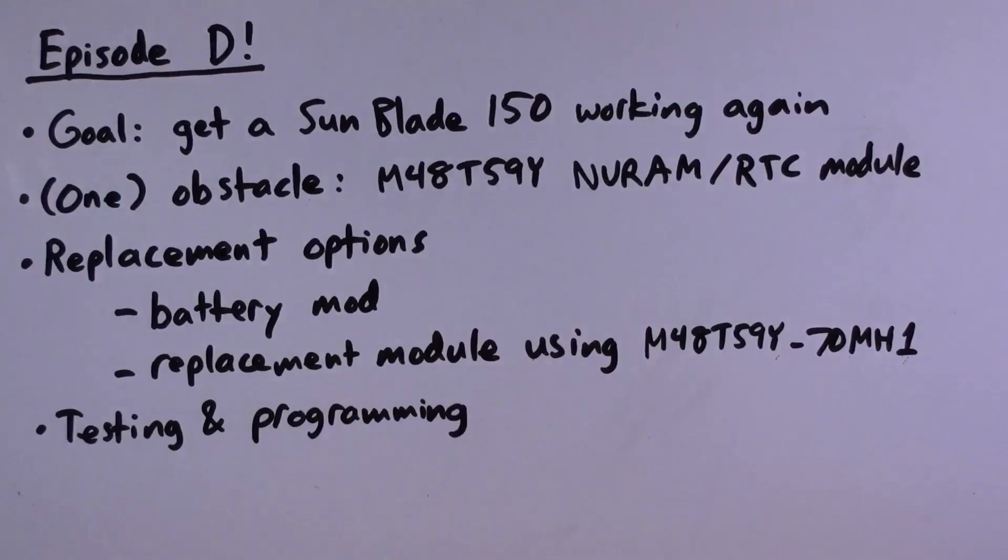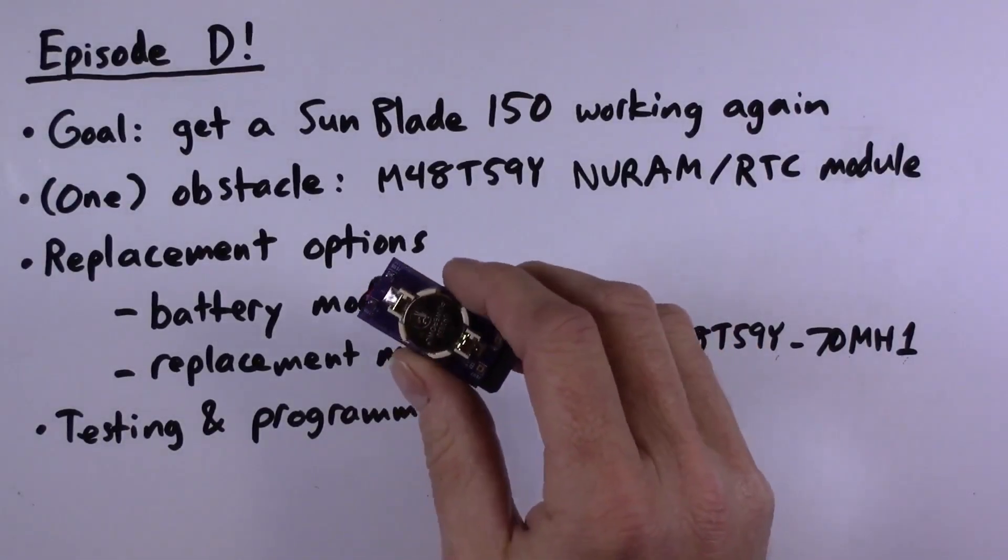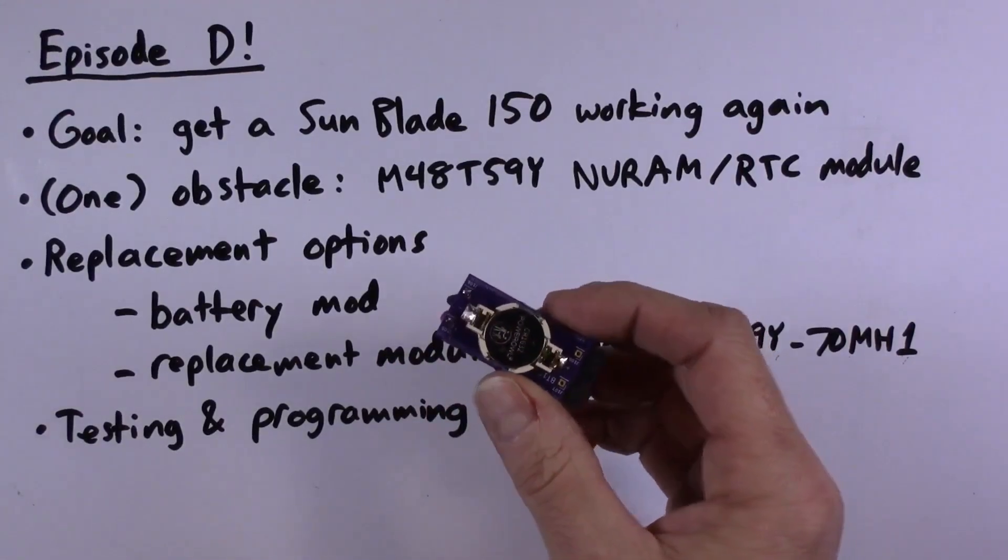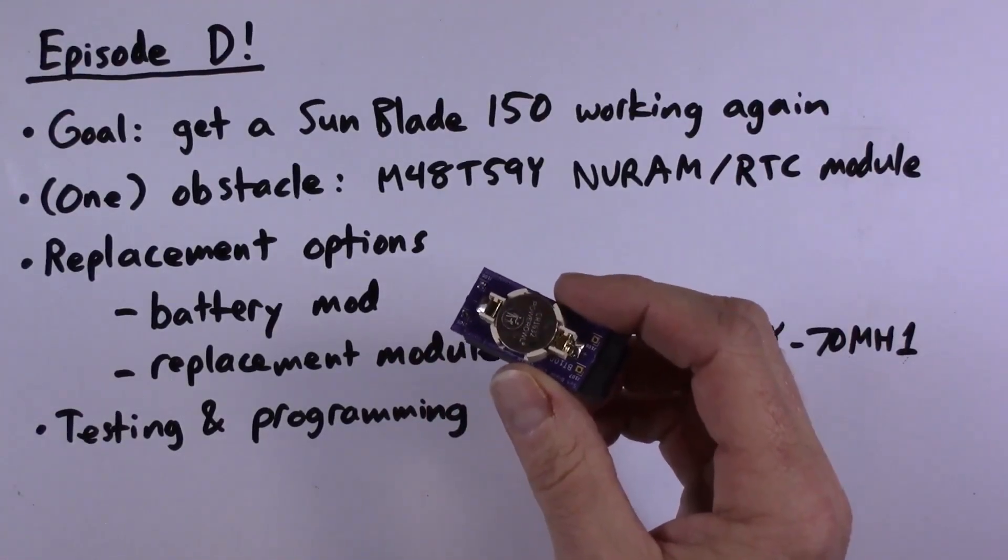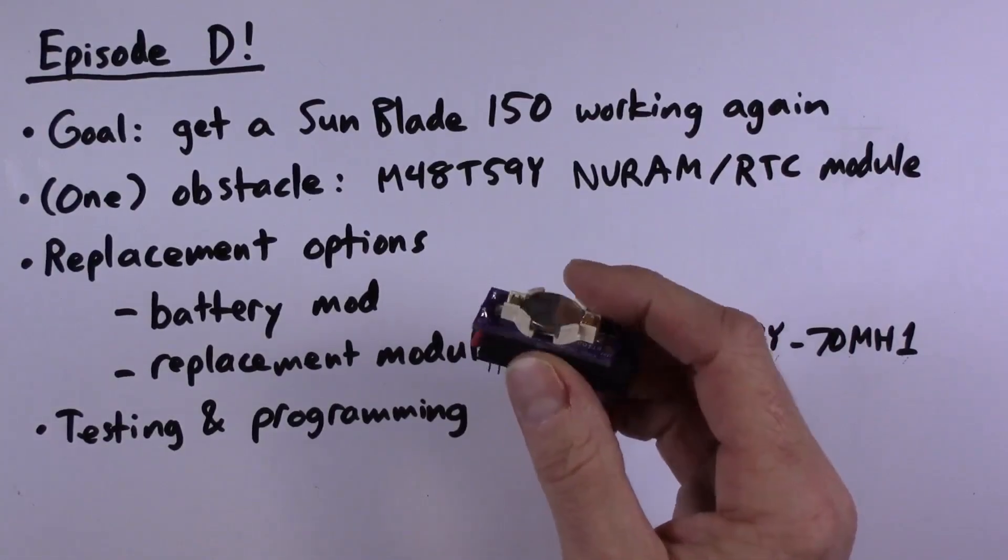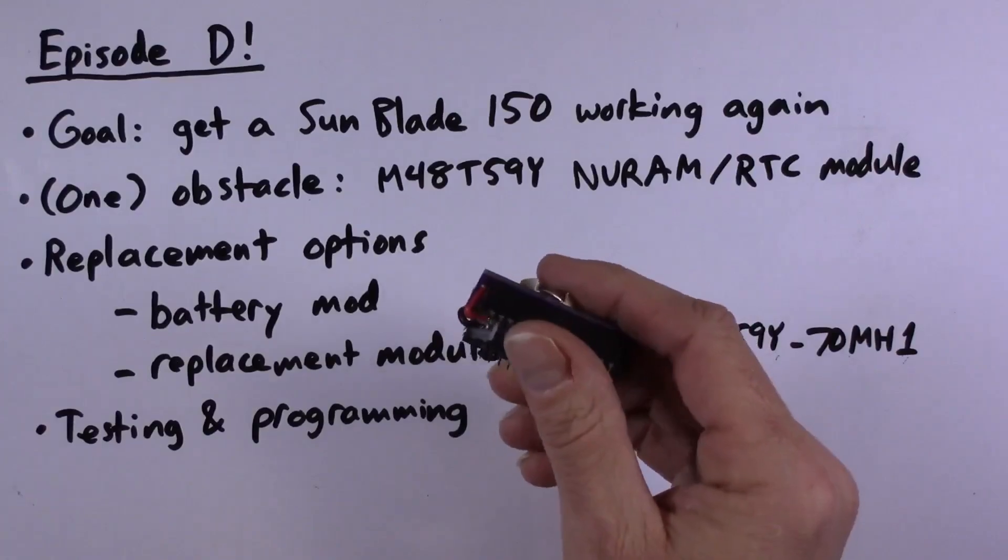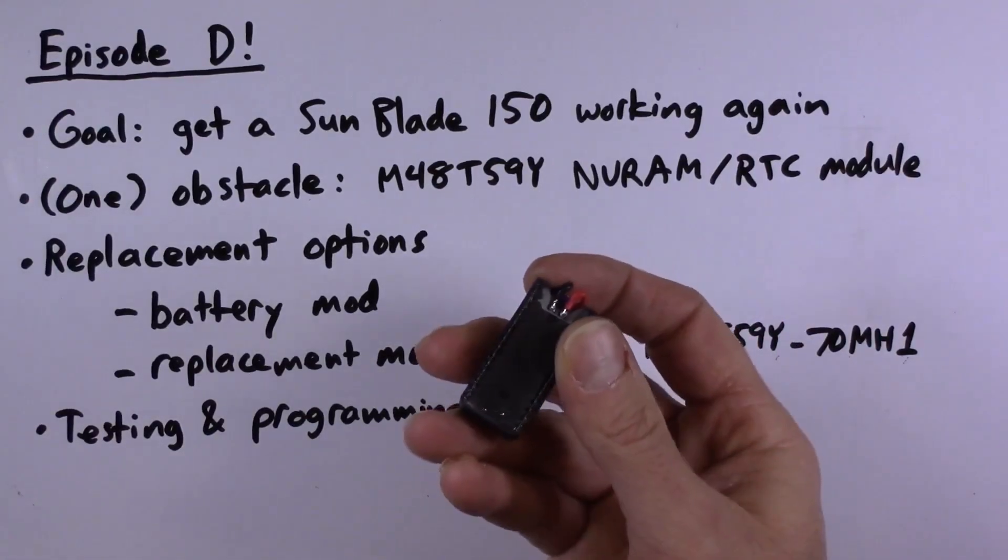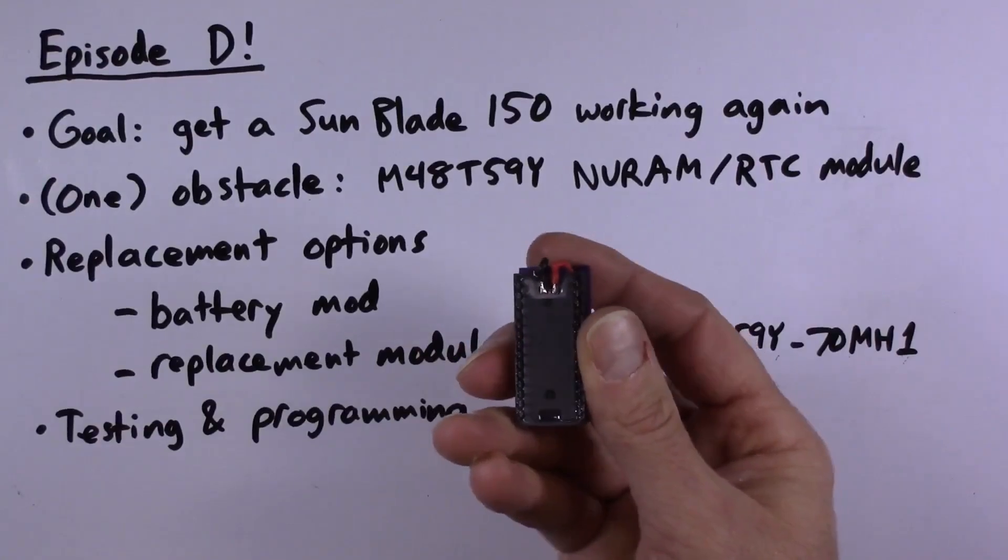So what are your options for replacing these? One option is to do the so-called battery mod, where you solder a coin cell battery onto the internal battery contacts inside the module. It's filled with an epoxy potting compound, so you need to use a Dremel tool or similar to cut away that epoxy.